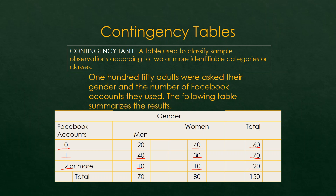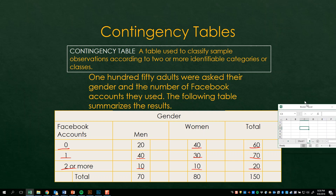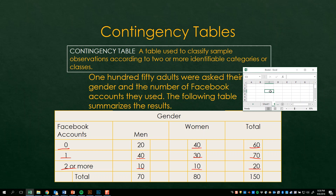What is the probability of an individual having zero Facebook accounts? In order to do that, you take 60 divided by 150, and the probability is 0.4. So you take 60, which is the occurrence of individuals having zero Facebook accounts, and divide that by the total, which is 150. So 0.4 is the probability of an individual, based on this sample, having zero Facebook accounts.